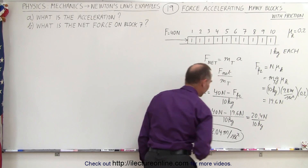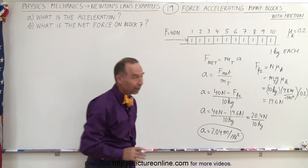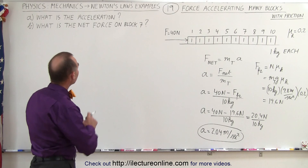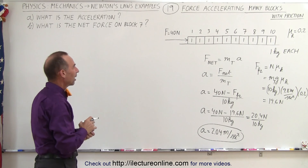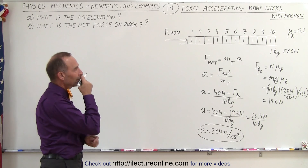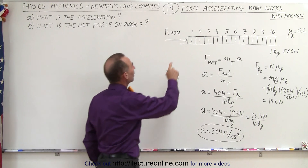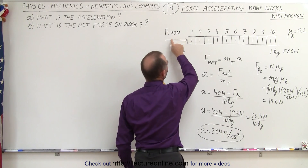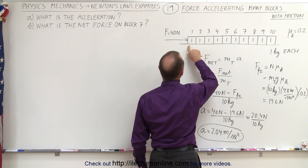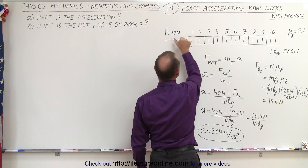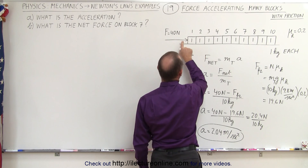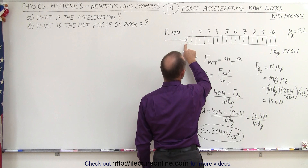That would be the acceleration of the whole system, and of course also the acceleration of each block. Now, what would be the net force on block 7? Well, we have 40 newtons applied to 10 blocks, so each block receives a force of 4 newtons.